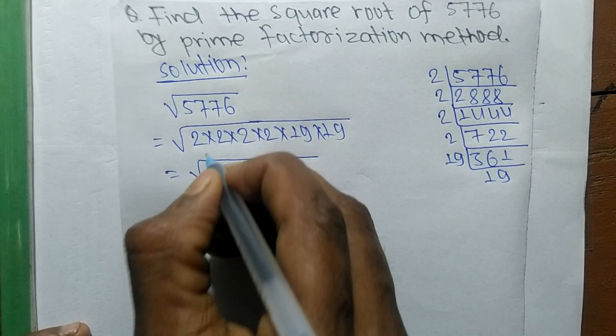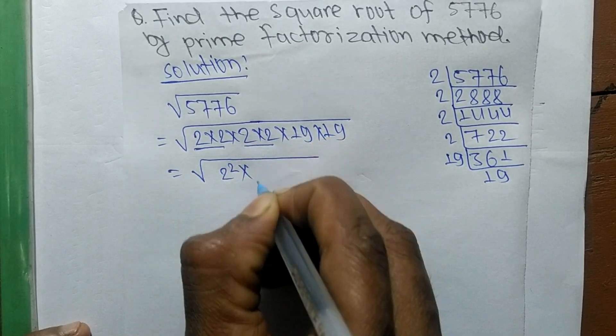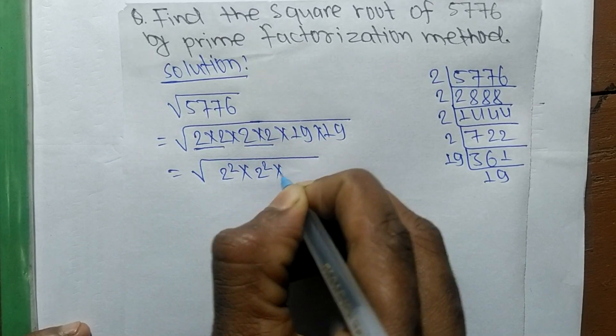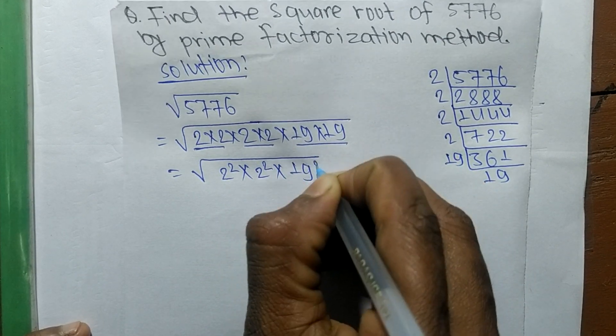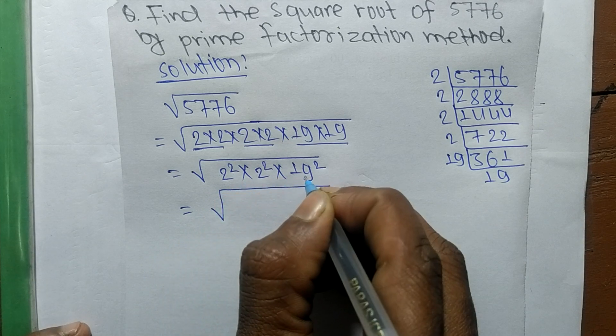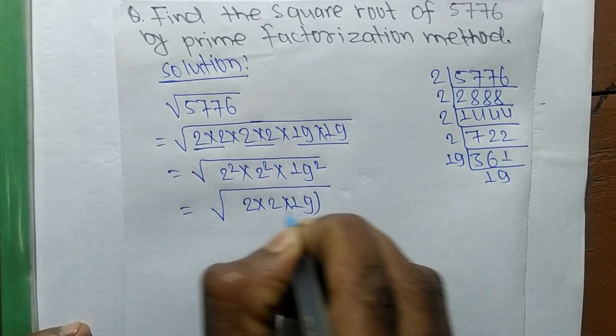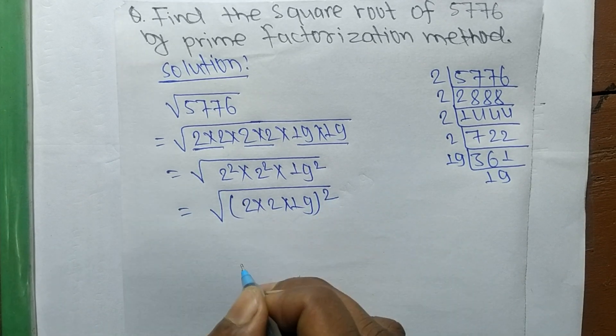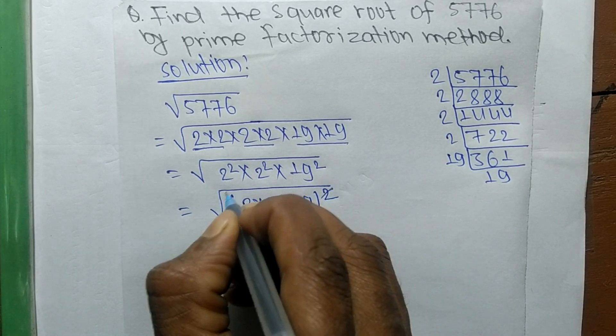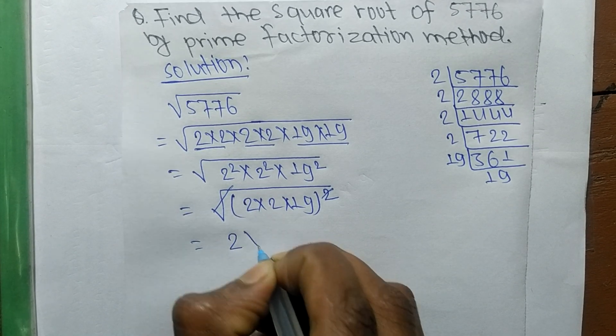2 × 2 is 2 squared, 2 × 2 again is 2 squared, and 19 × 19 is 19 squared. So square is present in all, so we take the square as common. The square and the square root cancel each other, so the remaining numbers are 2 × 2 × 19.